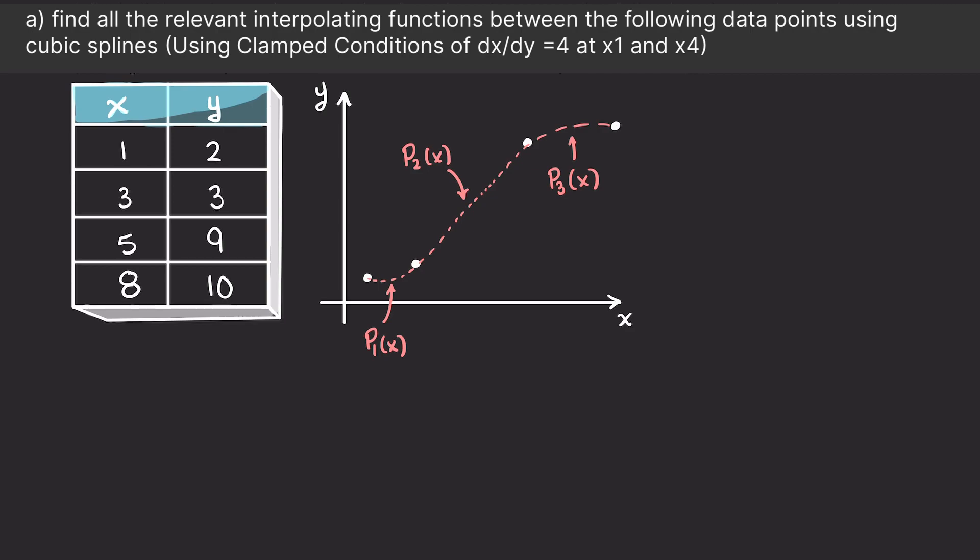And we are also told at our end points that we have a derivative of four. As we learned in our cubic spline interpolation theory video, we know that we will always have one less spline than our supplied number of data points. Therefore, with four data points, we will have three splines to fit cubic functions to.